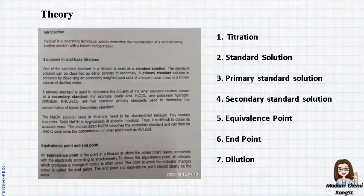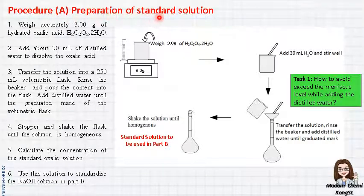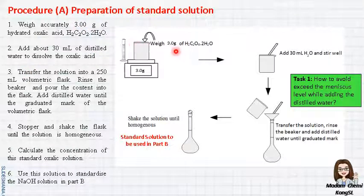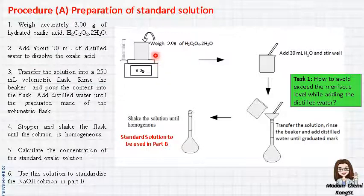Procedure A: Preparation of standard solution. These are the steps from your lab manual. Step number one, you have to weigh 3g of oxalic acid. From the last experiment, you learned how to use the analytical balance, so the step is the same. Make sure you tare first, then only start to measure 3g of oxalic acid.